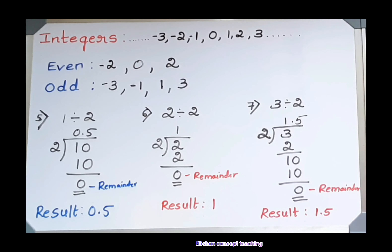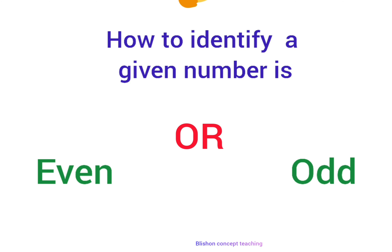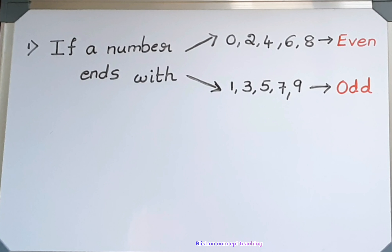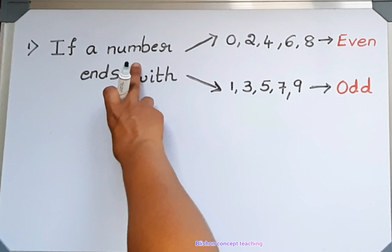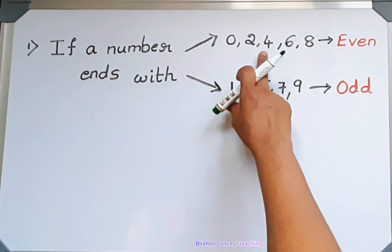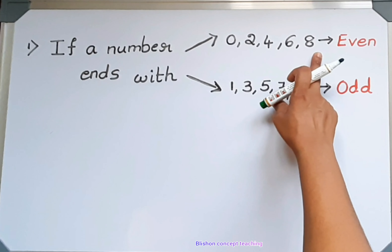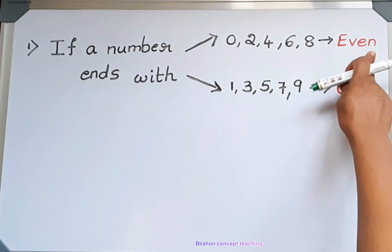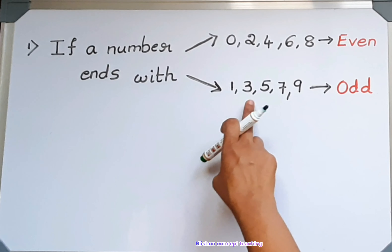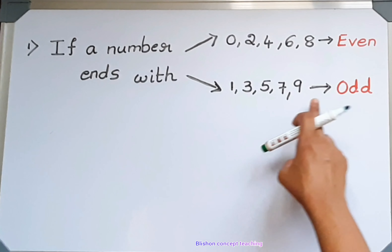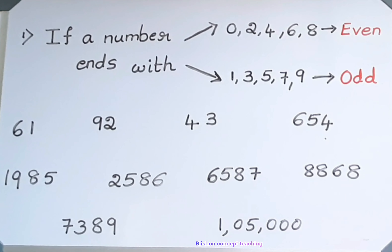By keeping the definition of even and odd numbers in mind, you can say whether a given number is even or odd. To quickly identify: if a number ends with 0, 2, 4, 6, or 8 then it is even. If a number ends with 1, 3, 5, 7, or 9 then it is odd.